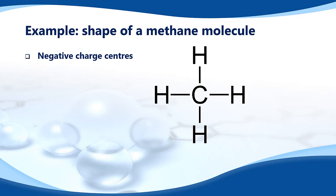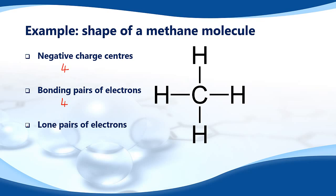We count the number of negative charge centers. These are single covalent bonds and they each count as one negative charge center, so there are four negative charge centers. Next we count the bonding pairs of electrons — a single covalent bond is a bonding pair, so that's four. Then we count lone pairs on the central atom — there are no lone pairs on the carbon atom, so that's zero.